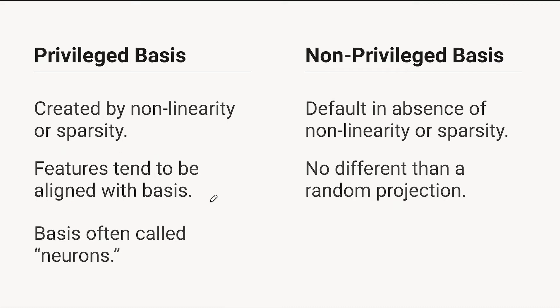If you imagine having a representation that's trying to encode two features in it and you have two ReLU neurons to do that, one way you could do it is align the features with the ReLU activations. Or you could have one neuron represent the average of the features and one represent the difference. If you do that, the point at which the features transition from firing to not firing is dependent on the other variable. So if you try to recover the variables afterwards, that's going to inject a lot of noise, and that's going to really incentivize you to go and align things with the basis.